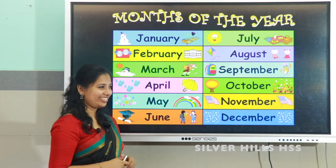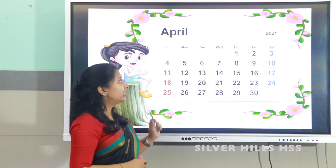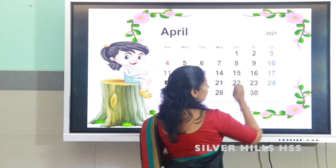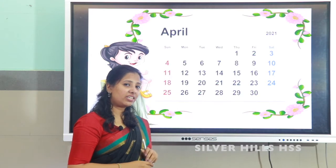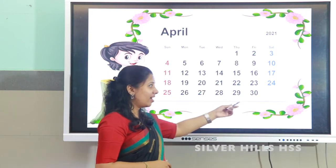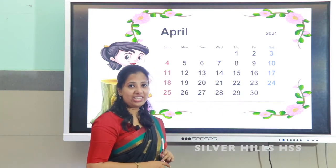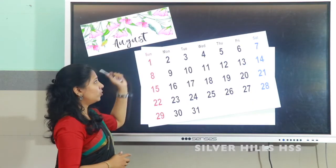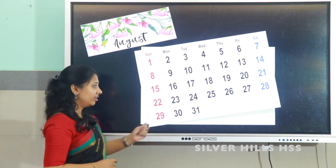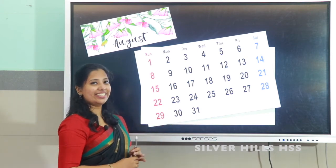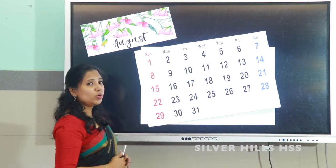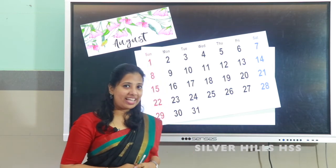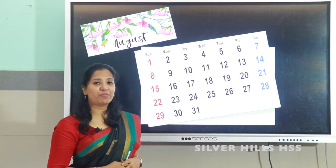Look here — this is the month April of the year 2021. How many days are there in this month? It's 30, right — very good. And what about August? How many days are there in August? It is 31 days. I hope you all enjoyed this class and understood what ma'am has taught. Thank you.